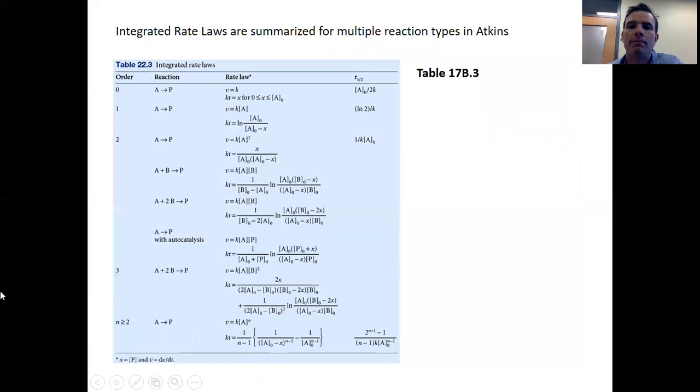All right. In summary, I would tell you to look at this table 17 B.3. Atkins will summarize all of these different integrated rate laws for various types of things. And you should be familiar with how you can use them to calculate concentrations of reagents and evaluate reaction order and all of that stuff. All right. I'll stop here.